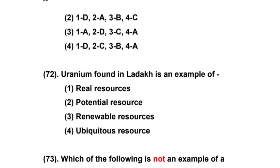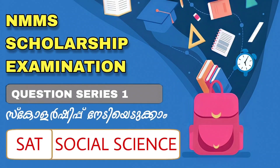Uranium found in Ladakh is an example of which type of resource? Options: 1) Real resource, 2) Potential resource, 3) Renewable resource, 4) Ubiquitous resource. The right answer is option 2 — Potential resource.